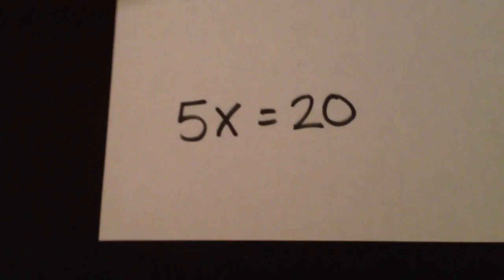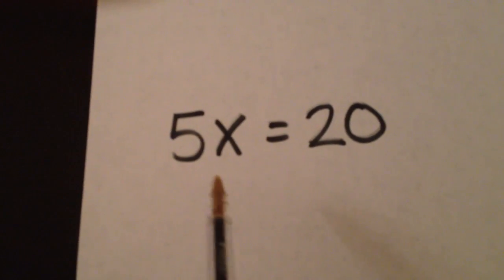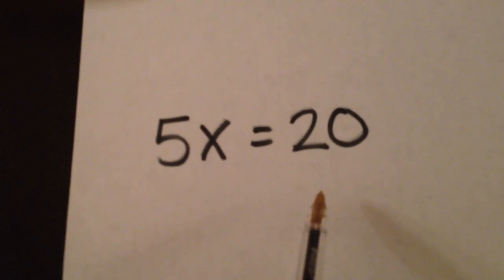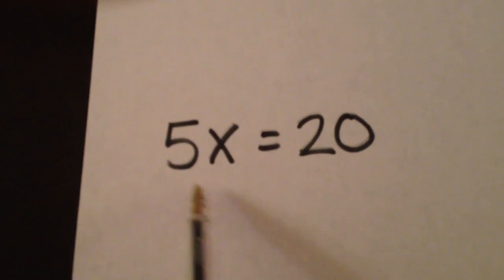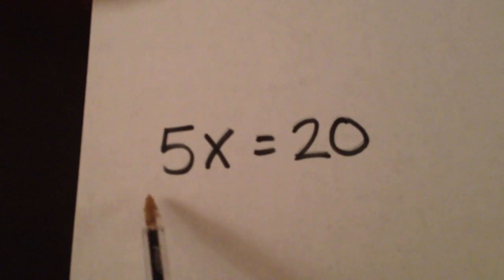Looking at the next problem, we have 5x equals 20. We know that 5x means multiplication—we have 5 x's. We want to know what 1x is equal to.